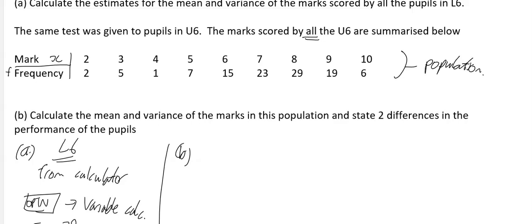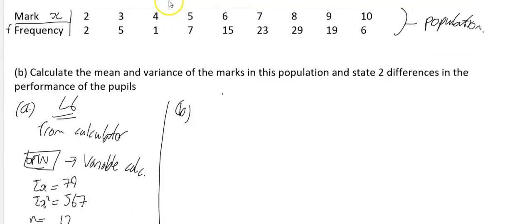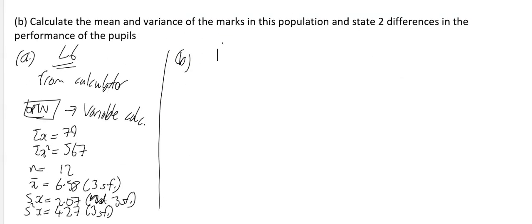This is upper sixth. From your calculator, sigma x is 772, sigma FX squared is 5906, n was 107, and your x bar is 7.21 to 3 sig figs.